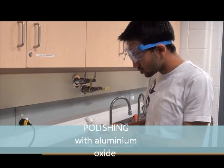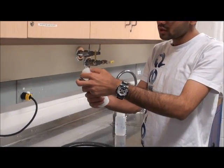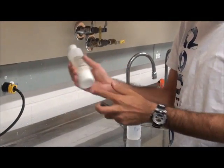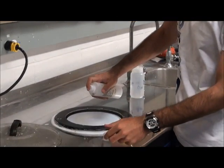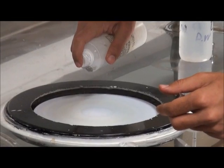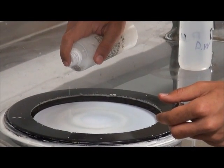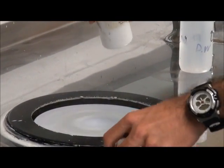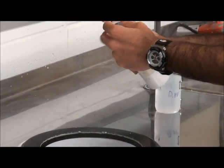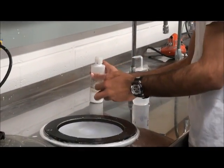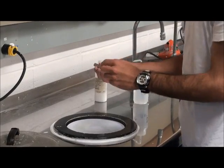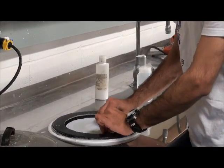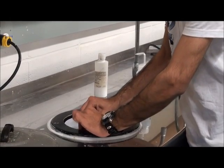First thing is to use the liquid aluminum oxide. First of all, we have to shake it properly. Then just put a small amount of aluminum on the rotor. Now just hold the sample tightly and move in the forward direction of the rotor.